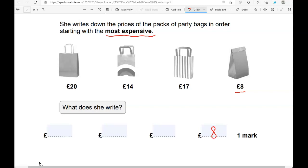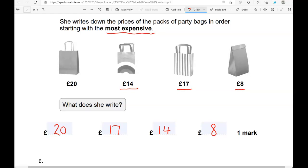Then if you count, you've got 8, 9, 10, 11, 12, 13, 14, 15, 16, 17, 18, 19, 20. So 20 is the most expensive, then we have 17, 14, and 8.